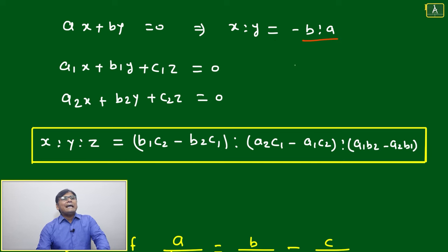If ax plus by equals 0, then the ratio x:y will equal minus b:a. With one equation and two variables, we will get the ratio, not a unique solution. Now we are expressing the equation in three variables.